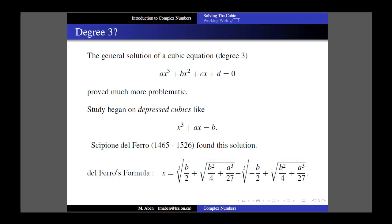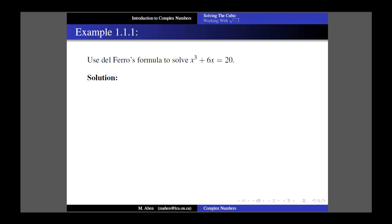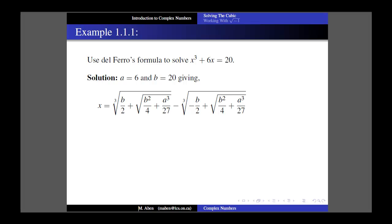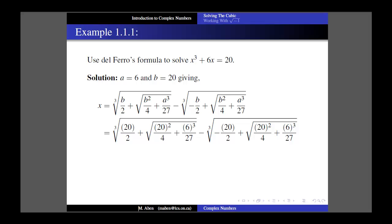Don't worry about memorizing del Ferro's solution - at first glance you can see why solving the cubic was taking so long. But this does give a solution to an equation of the form x³ + ax = b. Let's use this formula to solve x³ + 6x = 20. The value for a, the coefficient in front of x, would be 6. The value for b would be 20. Substituting into the formula and doing a little bit of calculating, we can reduce all those fractions and simplify down.